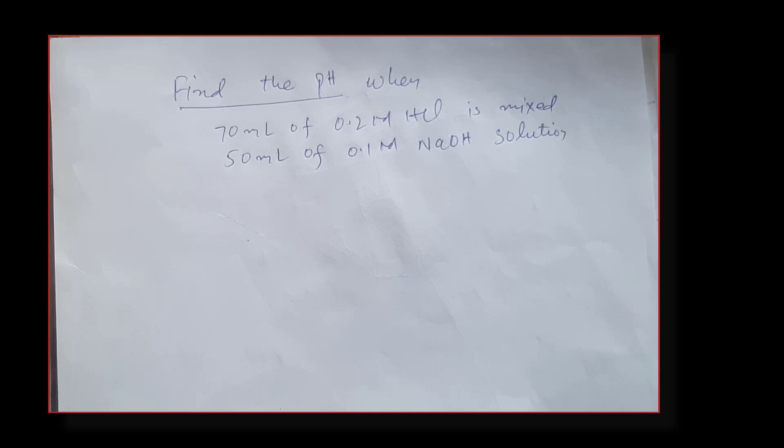This is actually a neutralization problem where HCl, a strong acid, reacts with a strong base sodium hydroxide to give us salt and water. To find the pH of this solution, first we need to find the moles of each species involved in this reaction: HCl and sodium hydroxide.